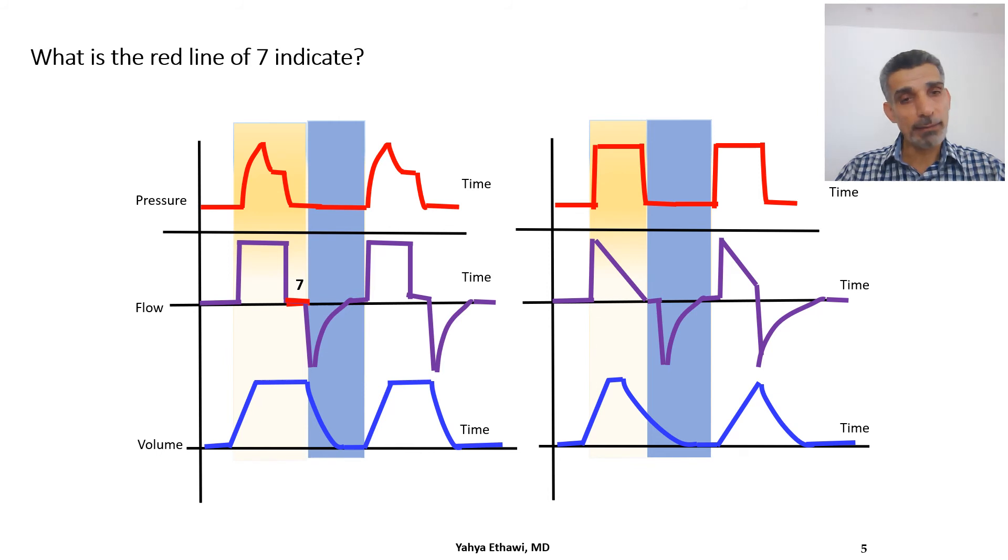And by looking at the red line at number seven, can you guess or suggest what number seven is trying to say, and if there is anything that needs to be done to correct if there is a problem, or if there is no problem?